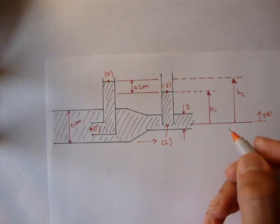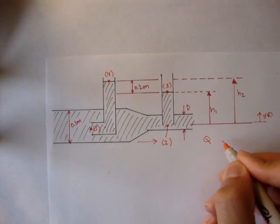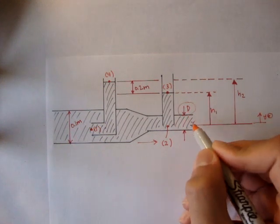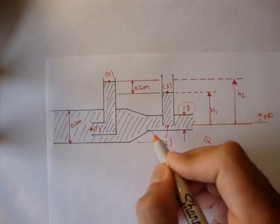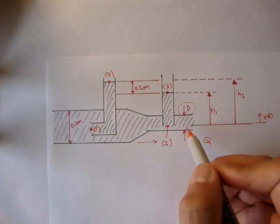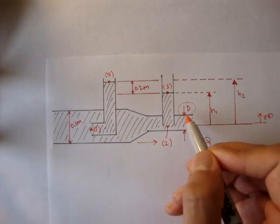And they want us to find the flow rate in terms of the diameter d. So this is the diameter d of the smaller tube, because it changes from a 0.1 meter diameter to just a diameter d, and it's obviously smaller.